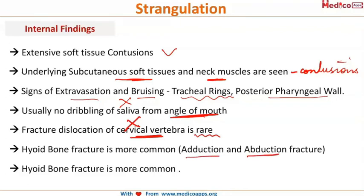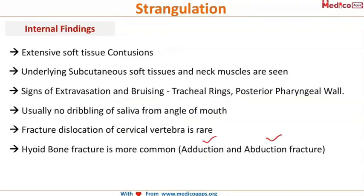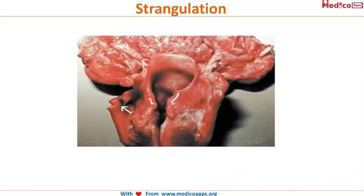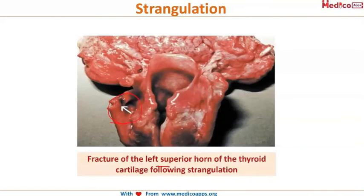Hyoid bone fracture is more common in strangulation, and both adduction and abduction fractures can be seen. The adduction fracture occurs due to throttling — the broken fragment has an inward angulation from the inward force exerted by the fingers of the assailant. In contrast, abduction fracture occurs in ligature strangulation and hanging, and shows an outward angulation of the broken bone fragment. You can see here the fracture of the left superior horn of the thyroid cartilage following strangulation.